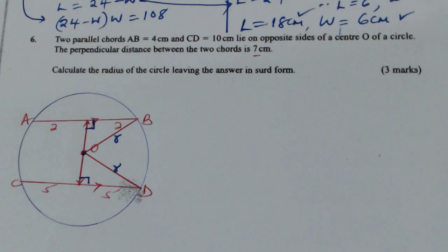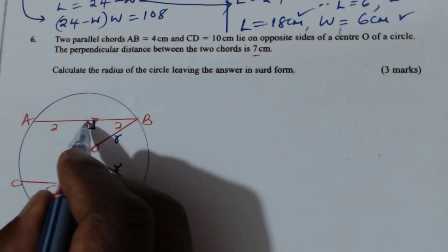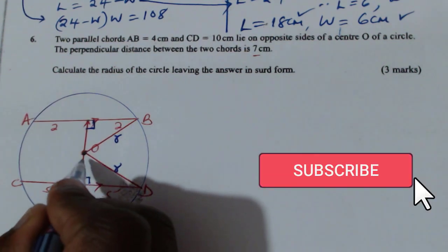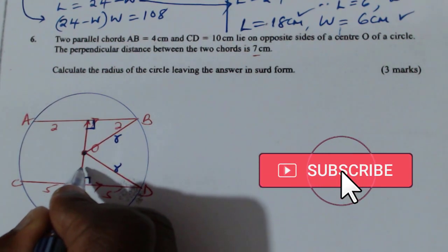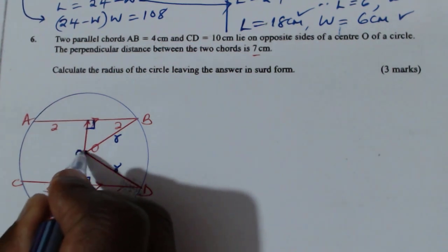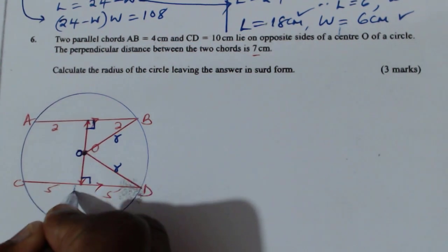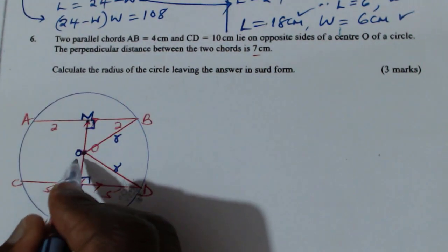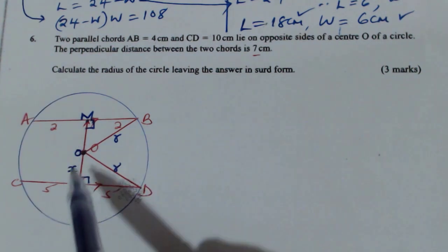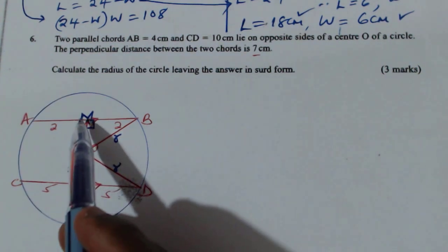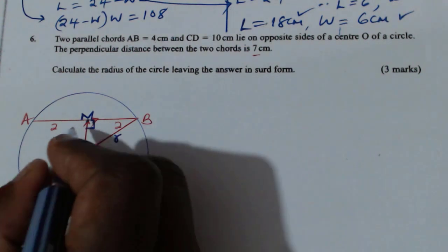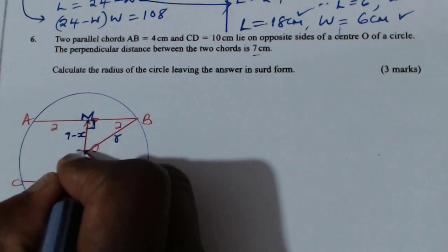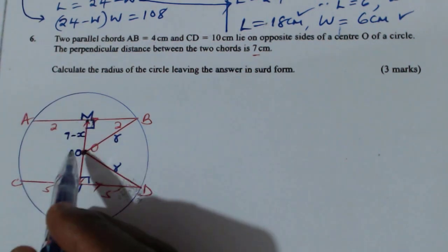For those triangles, I know the distance between the two chords is 7. I will let the center point be O, call this point N, and this one M. So let NO be X. Since NM is the distance between the two chords and equals 7, the remaining distance OM will be given by 7 minus X.